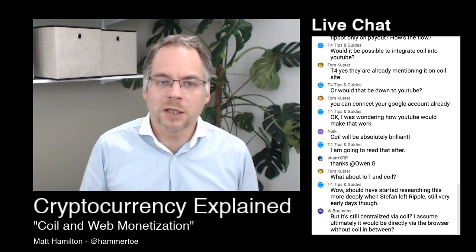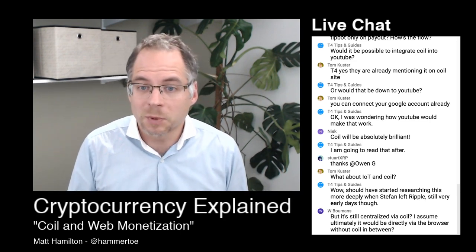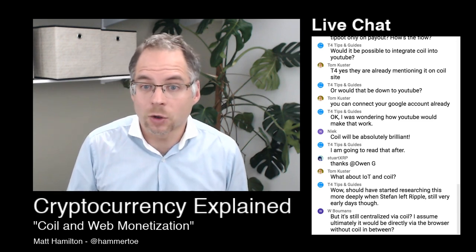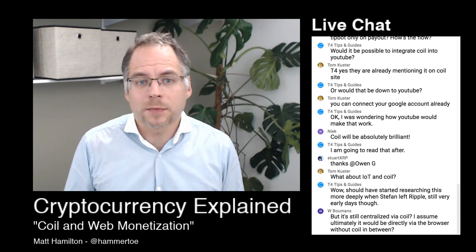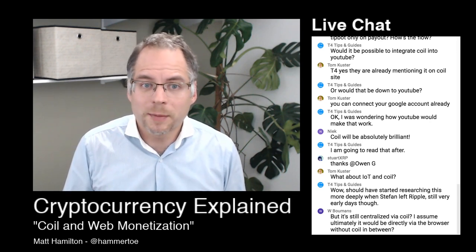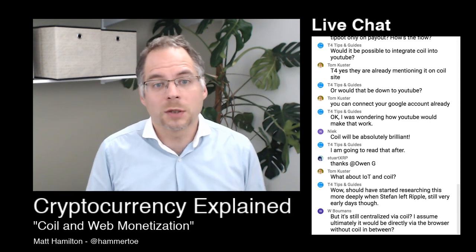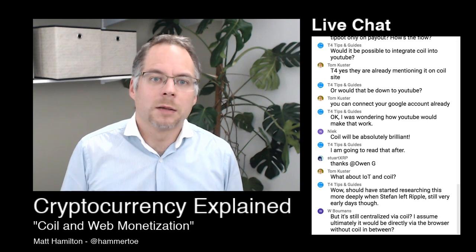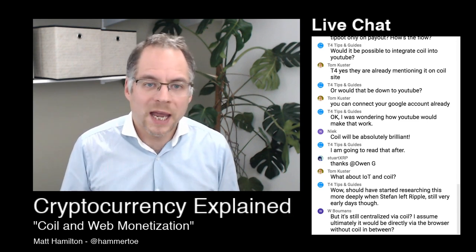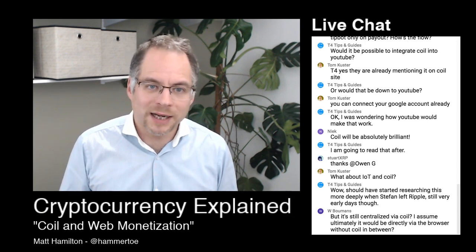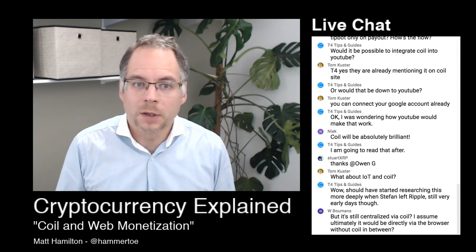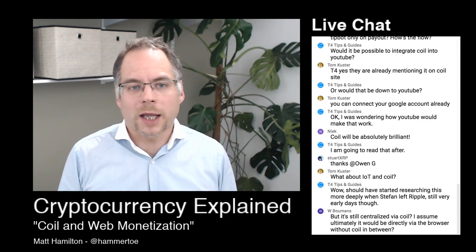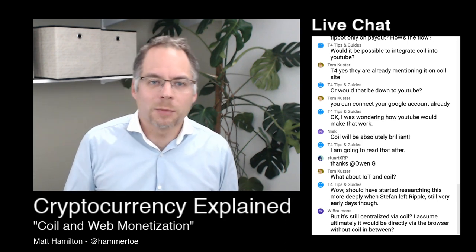XRP is going to be a key player in this because it's one of the fastest ways to make these payments. Even though you pay Coil five dollars a month via credit card, Coil pays end content providers via XRP. If content providers want Bitcoin, it'll still be XRP until the conversion point. This could be bigger than some other XRP use cases — if every website on the internet did this, it could be massive.